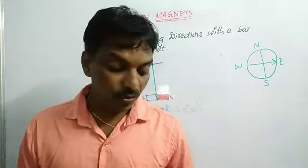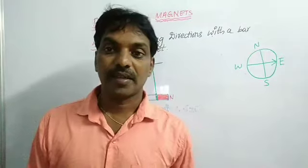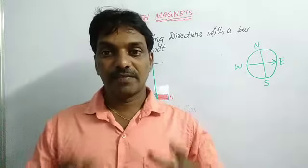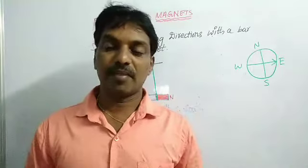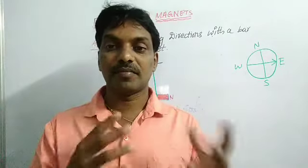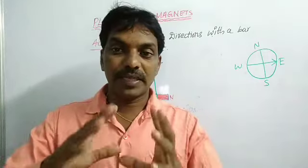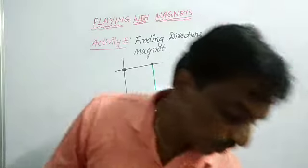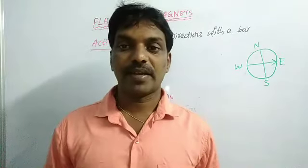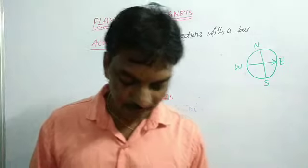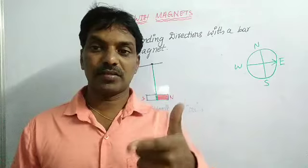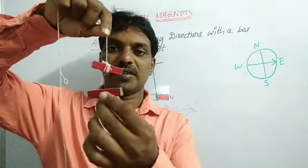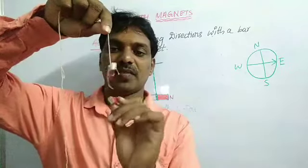One important note: don't keep any other magnet near the suspended bar magnet or near the compass. If there is another magnet near the compass, due to the properties of the magnet, the directions will change. We cannot find out the exact directions of that place. For example, I am going to show you with two magnets — if I keep another magnet near this one, see, the directions are going to change.